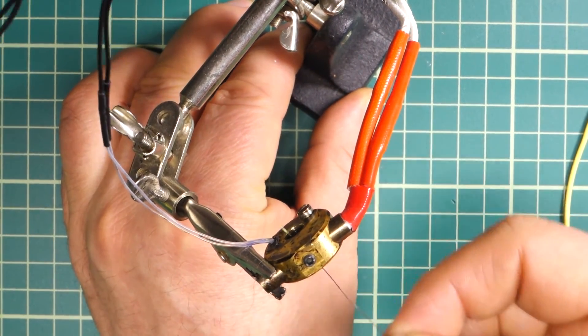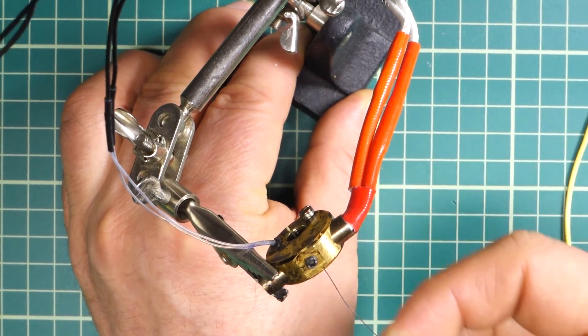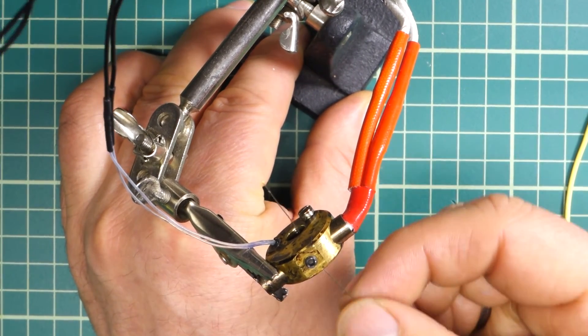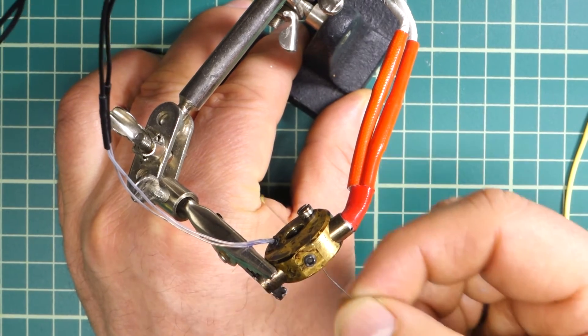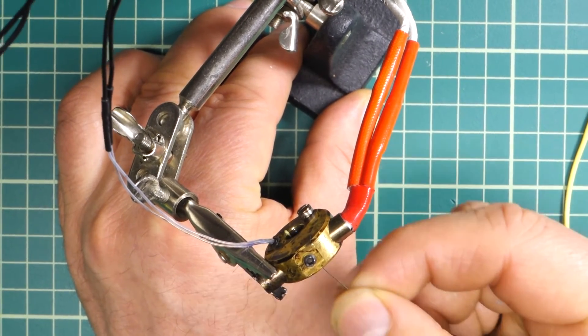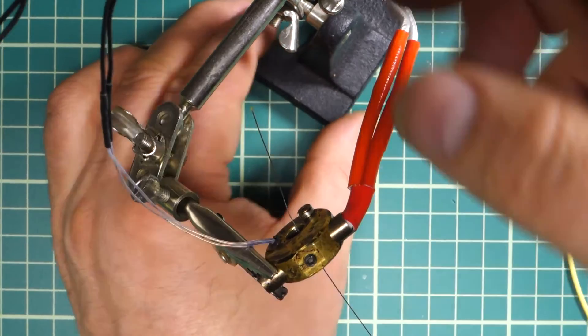And here we have got the guitar wire going all the way through. So the high E string is thin enough to go all the way through.